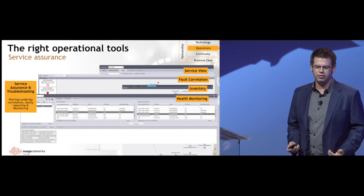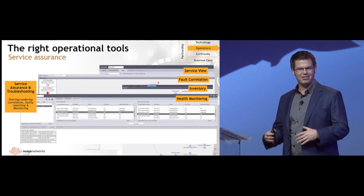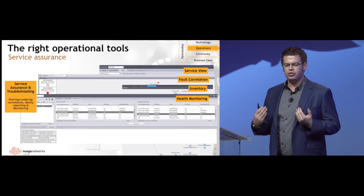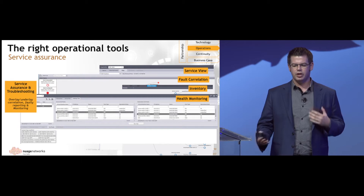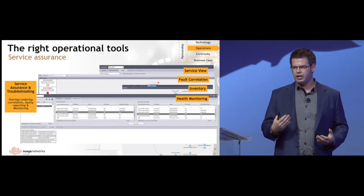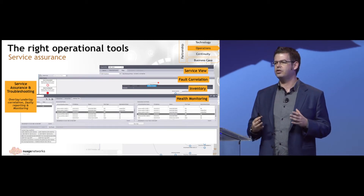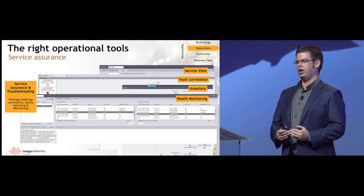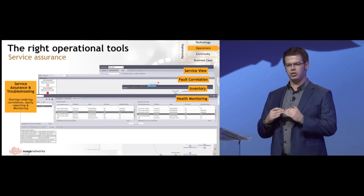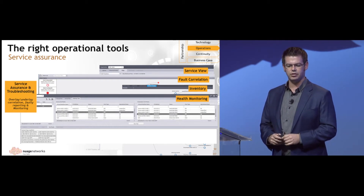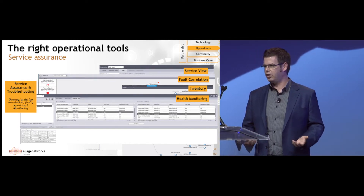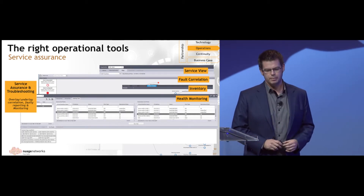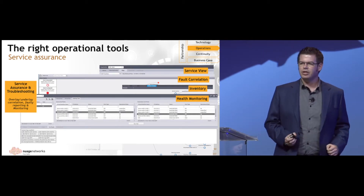From an operational perspective, I need to make sure that my ops team can actually manage this technology. I need to do things like service assurance and troubleshooting — to see what's going on in my services. I need to be able to break those service views out and understand how I visualize a service that is now decoupled from the transport network. I need to understand the underlay and the overlay where it touches my underlays. That's a significant value that operators can bring to the SD-WAN environment — you have visibility of the underlay. It's not a ships-in-the-night service, and that allows us to do things like fault correlation.